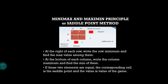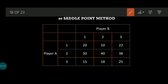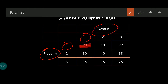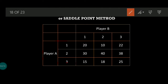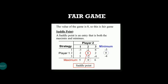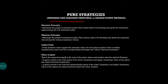Looking at the question, we have player A and player B. When player A selects strategy one and player B selects strategy one, the result is 20. This means player A gains 20 and player B loses 20. The matrix is written such that positive values represent gain for player A, and negative values represent gain for player B. Since there are no negative values here, all outcomes favor player A.